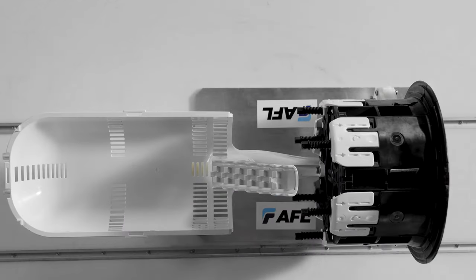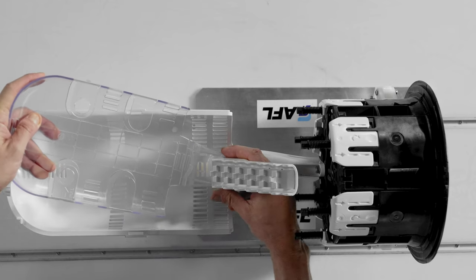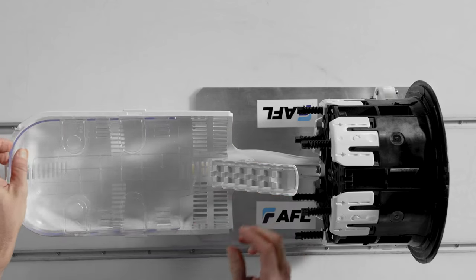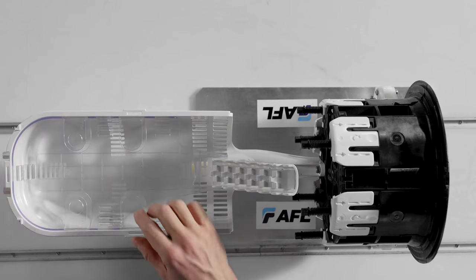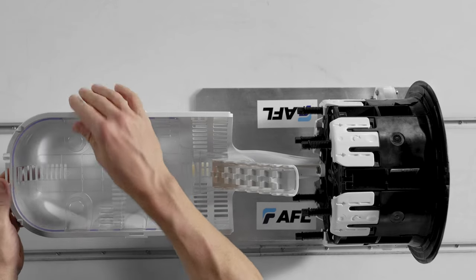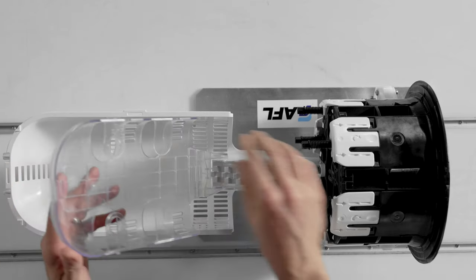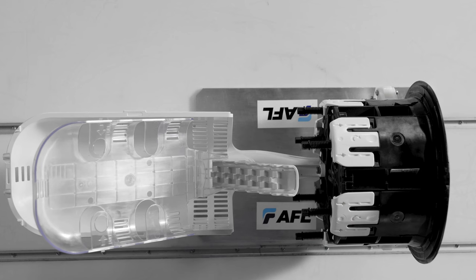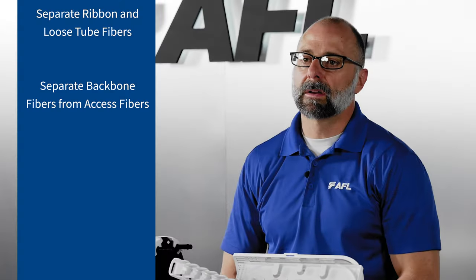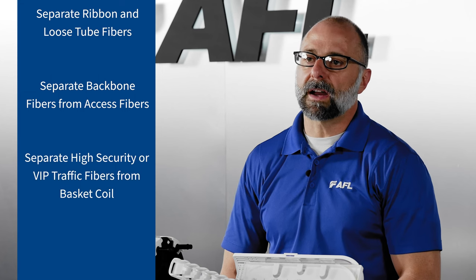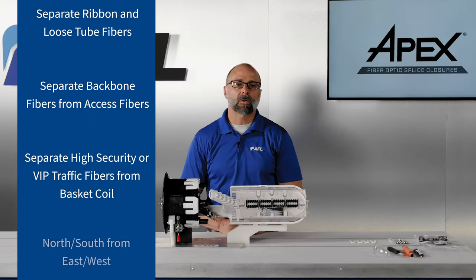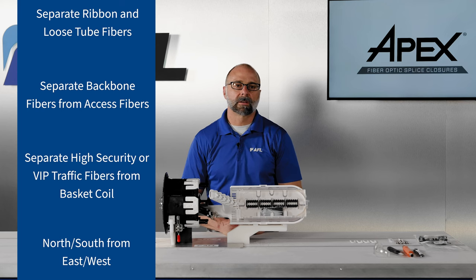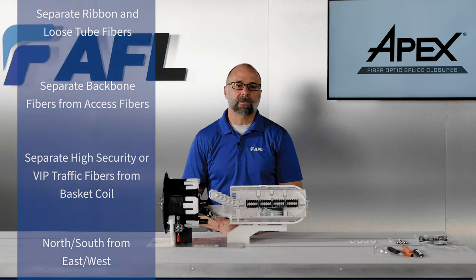This is an optional inner basket on the X2 and X3 Apex models which is designed to assist with the separation of fibers in the basket. The basket can be used to separate ribbon and loose tube fibers, storing either wherever is most convenient. Separate backbone fibers from access fibers, or separate high security or VIP traffic fibers from the coil basket, or north-south from east-west. The basket has many applications if you need it. It is also easily removable in the field if not needed for an installation.